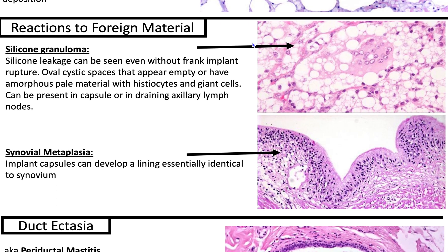Let's talk about reactions to foreign material. With a silicone breast implant there can be leakage — even microscopic leakage without frank implant rupture. You'll see oval cystic spaces that appear empty or have amorphous pale material with histiocytes and giant cells. Look at this giant cell where you have more than 10 nuclei enmeshed in the cytoplasm. It can be present in the capsule or in draining axillary lymph nodes.